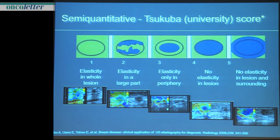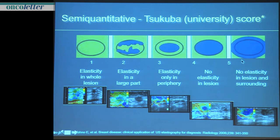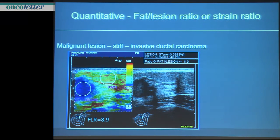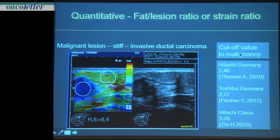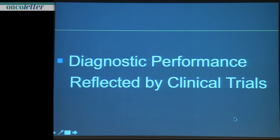Reading various names for the qualifying score for strain elasticity — they're all the same. The university was Tsukuba, and Ito was the first in publication. Ueno was the clinical father and leader of the working group. The score respects the lesion and the surrounding tissue. For a typical malignant lesion in fat, a quotient between the elasticity values of both gives a ratio. This ratio is better for quantifying than a single lesion measurement. There are different cutoff values from one system to another and from one nation to another — for example, Chinese breasts are a little bit firmer.